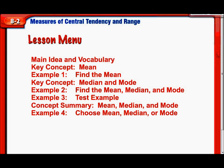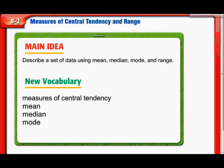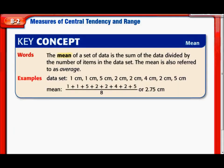Here you can see we'll be defining a few words and describing sets of data using the mean, median, mode, and range. So what is the mean? The mean of the data is the sum of the data divided by the number of items. Or average is the other word for mean.